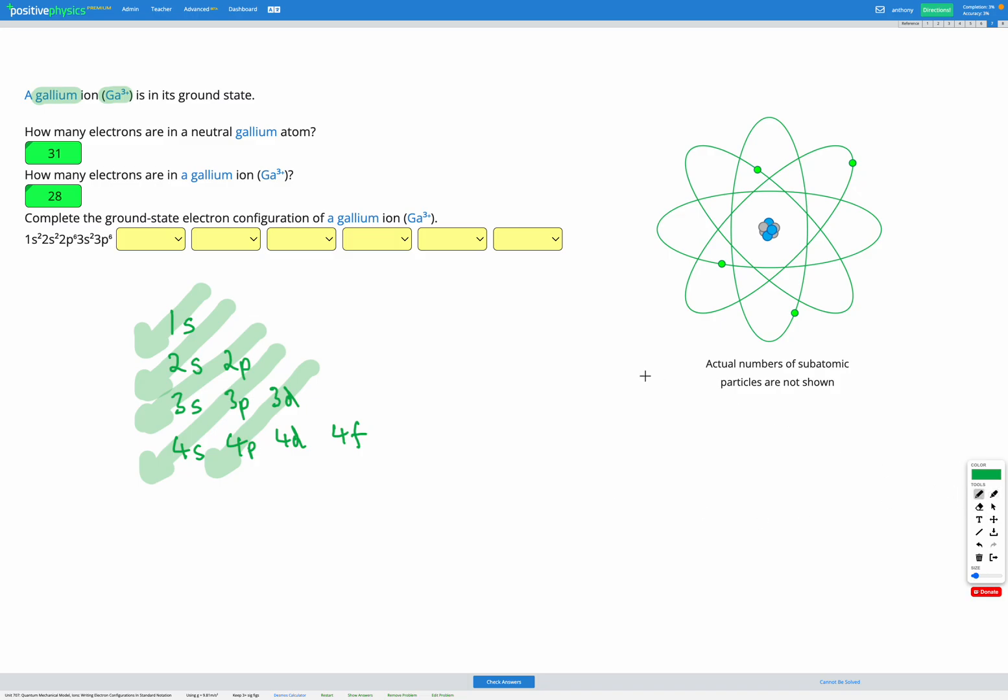We've got 31 total electrons. The first two are gonna go in the 1s subshell, so that's 1s². The next two electrons are gonna go in 2s, so 2s². The next 6 will go in 2p, 2p⁶. That's 10 in total. We still need to get to 31 for our neutral atom.